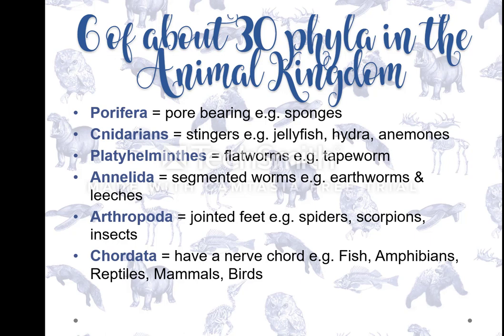The fourth phylum is Annelida — segmented worms, also known as roundworms. A worm that you can find segments in, like a tapeworm with more than one section. The fifth phylum is Arthropoda — your arthropods. They have an exoskeleton and jointed feet — many feet that are somehow joined. Arthropods should make you think of spiders. Your example organism is going to be spiders.